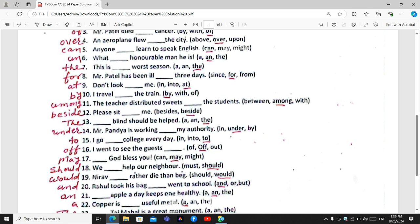I went to see the guests. Off, O double F is the right option here. We cannot say that guests out. We cannot let them get out, but guests mehmano off. I went to see the guests off.